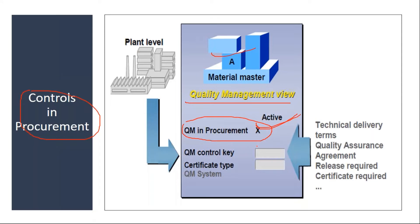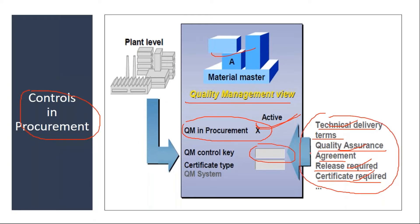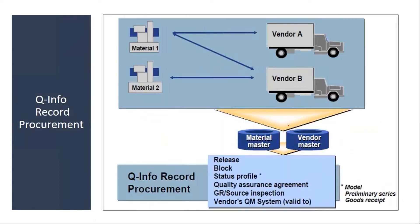You have to assign a suitable control key with the required controls - whether you want vendor release, whether certificate receipt is mandatory, and when technical delivery terms need to be maintained. You should have a quality assurance agreement document with the vendor. Whatever controls you need, assign the appropriate control key in the QM control key field.